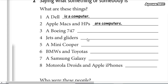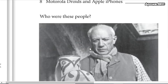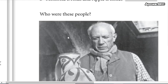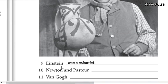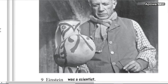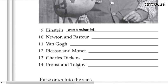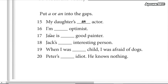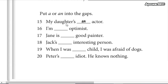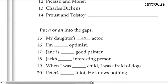So you are going to say what are these things and who were these people. Einstein was a scientist. So you are going to use A or AN, and we continue using A or AN in this part. You are going to fill the spaces with A or AN — my daughter's an actor, I am A or AN. So you already know the rules for this.